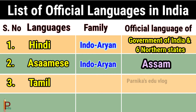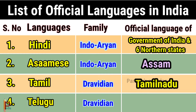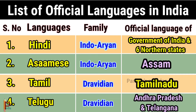Language Tamil belongs to the Dravidian family and is the official language of Tamil Nadu. Language Telugu belongs to the Dravidian family and is the official language of Andhra Pradesh and Telangana.